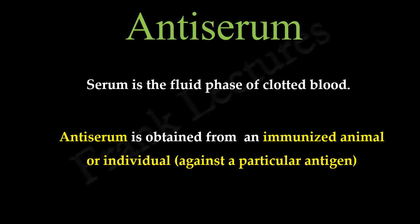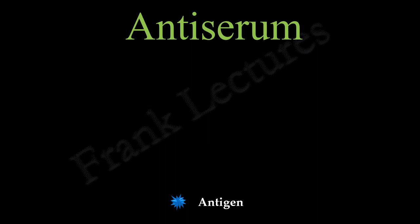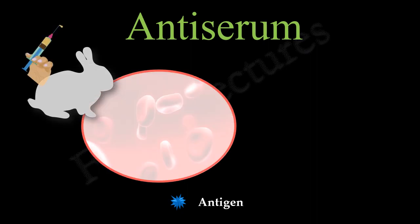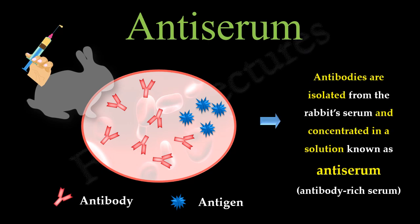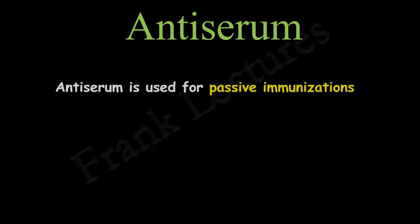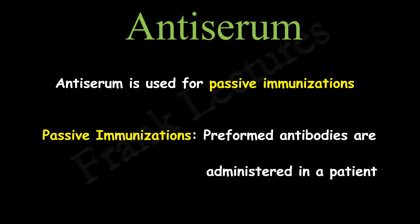Suppose there is an antigen responsible for a disease. These antigens are injected into a rabbit. To the immune system of the rabbit, these antigens are foreign or non-self. The rabbit will respond to this foreign antigen by producing antibodies against it. These antibodies are isolated from the rabbit's serum and concentrated in a solution known as anti-serum. Anti-serum is used for passive immunization, in which pre-formed antibodies are administered to a patient — for example, to protect people who have been exposed to extremely virulent infections or toxins such as tetanus, hepatitis, rabies, and snake venom.